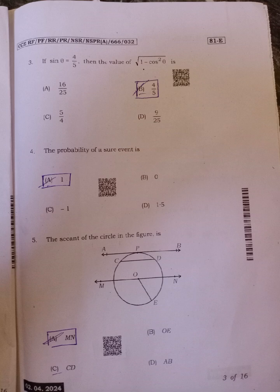Fifth, the secant of the circle in the figure is answer A, MN.